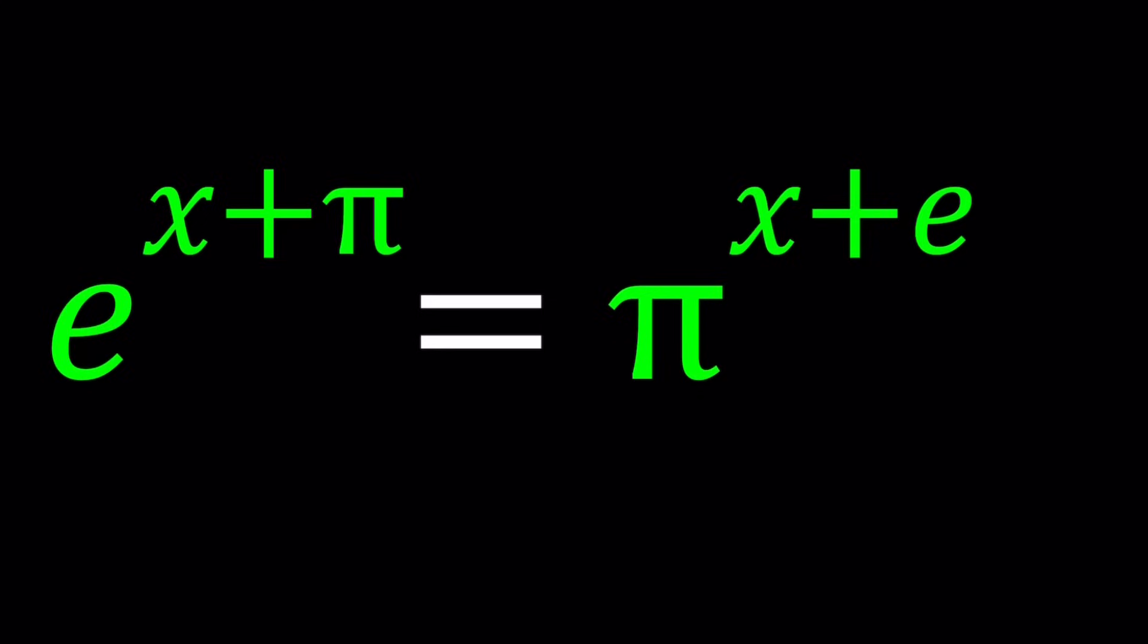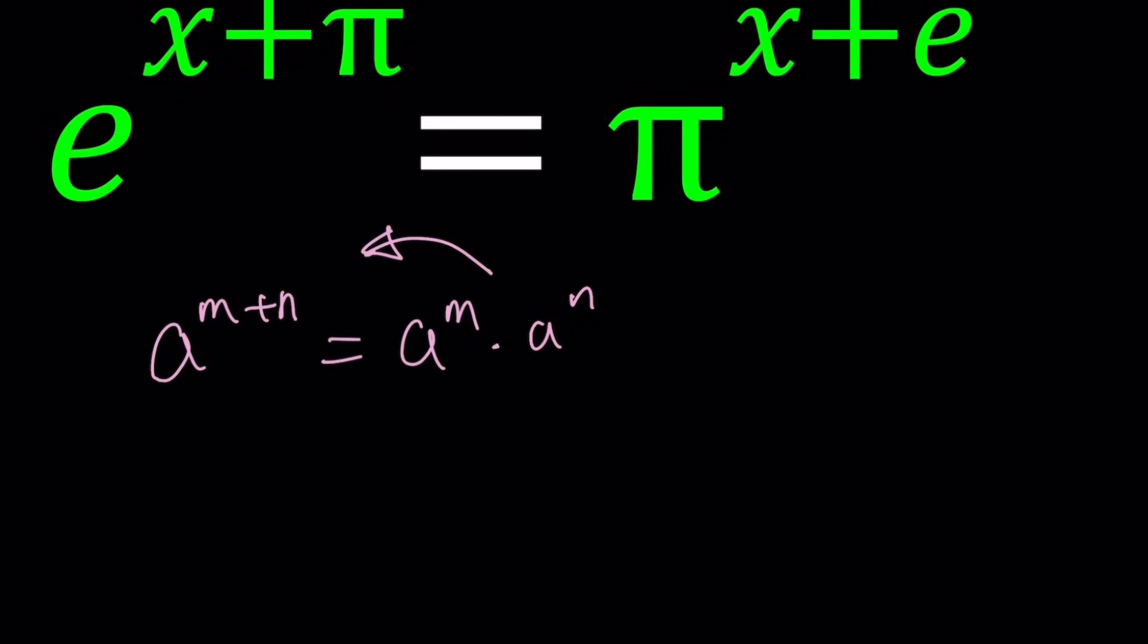How do you solve this equation? First step is we're going to separate the exponents. As you should know, if you have a to the power m plus n, then you can write it as a to the m times a to the n. So let's go ahead and write e to the power x plus pi as e to the x times e to the pi.